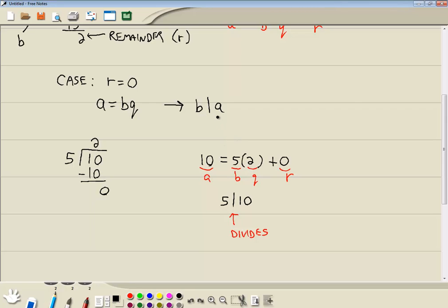So if you run across a problem that is referring to B divides A, you can equally write it in this form. And to say it divides A means the remainder is 0. It divides into it evenly. We're going to keep that in mind because we're going to use that here shortly.